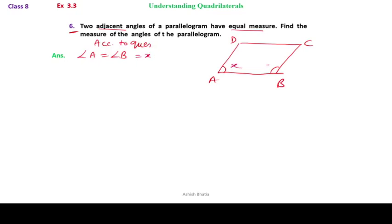Now according to the property of parallelogram, we know that adjacent angles are supplementary. That means angle A plus angle B equals 180 degrees. That means x plus x equals 180 degrees, so 2x equals 180 degrees.